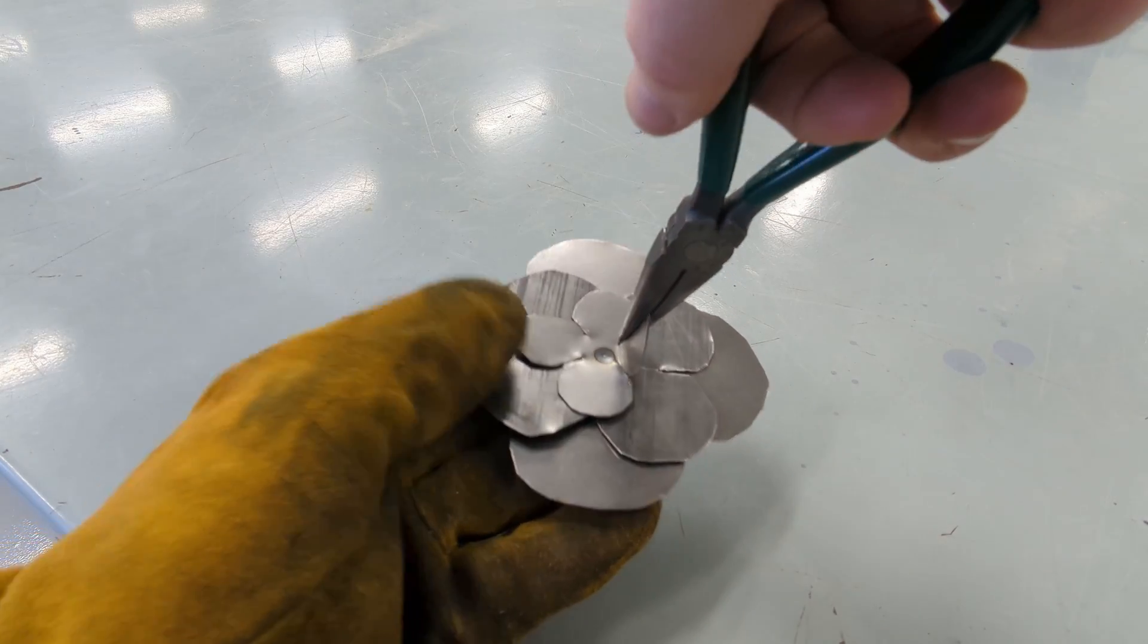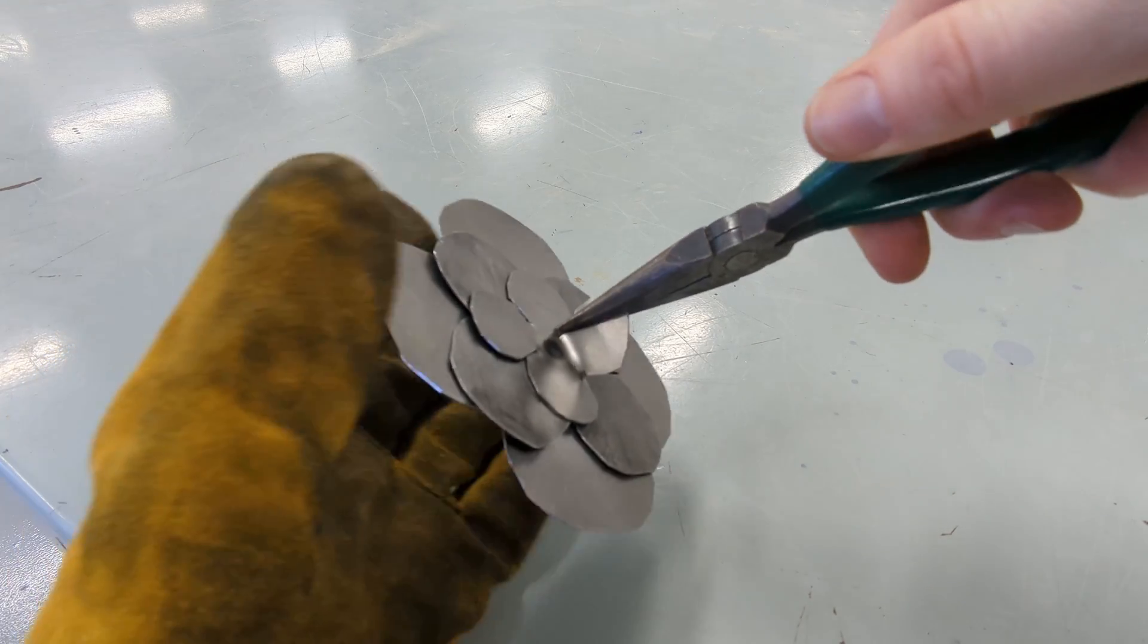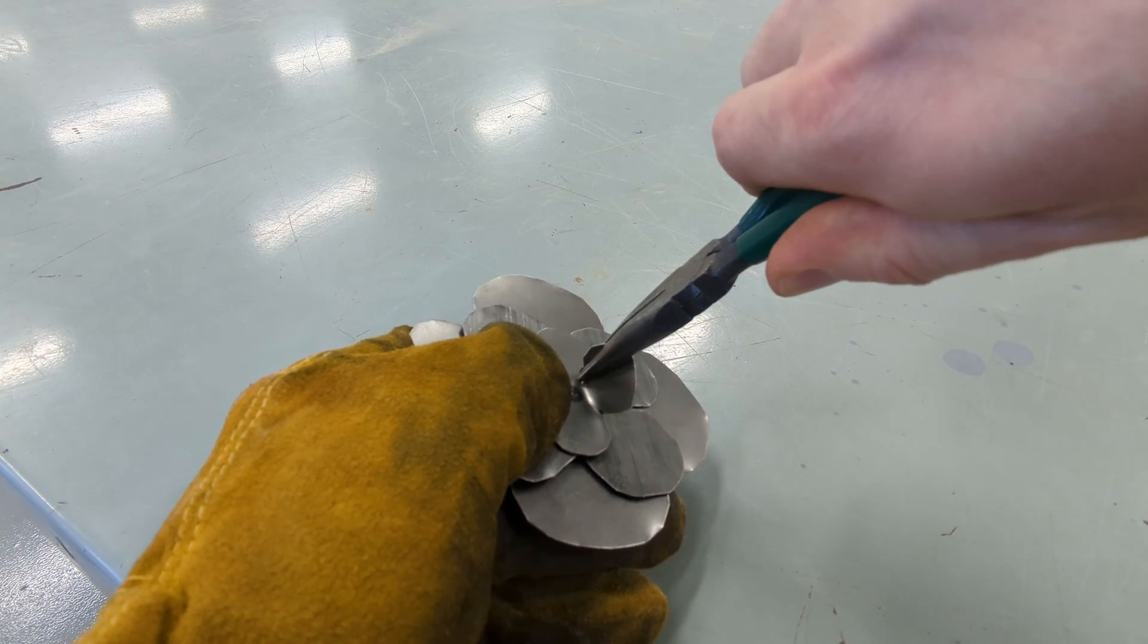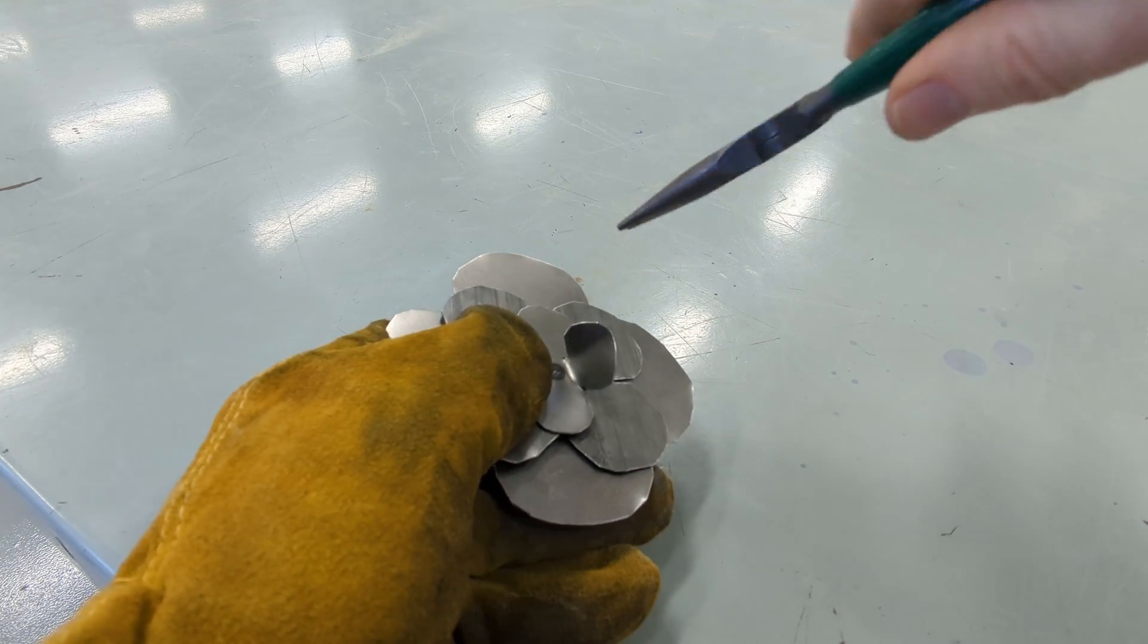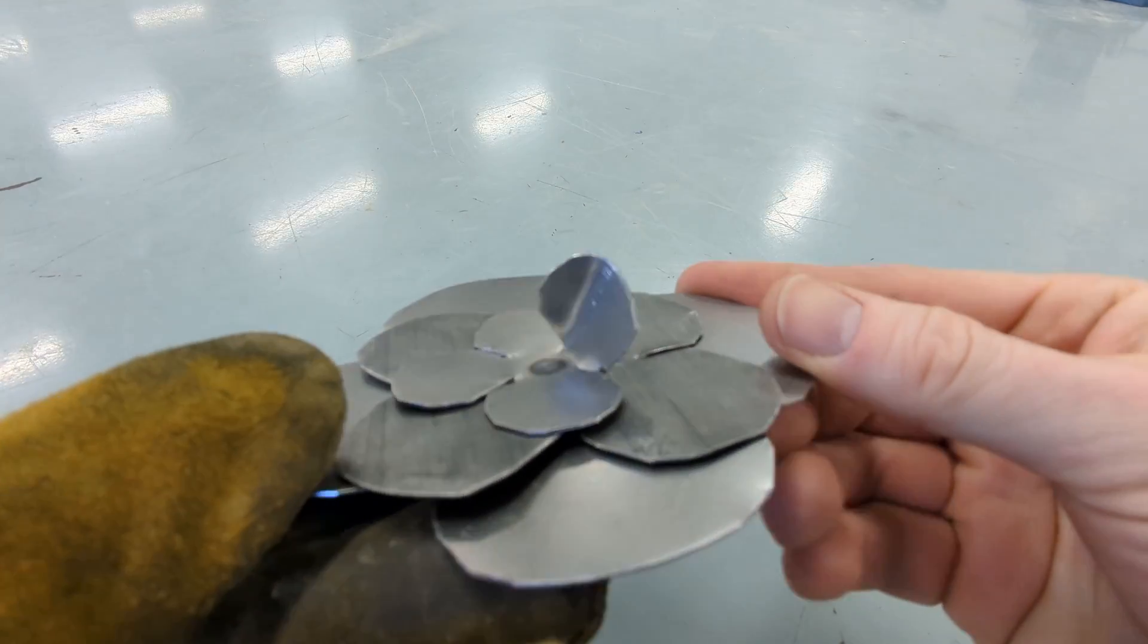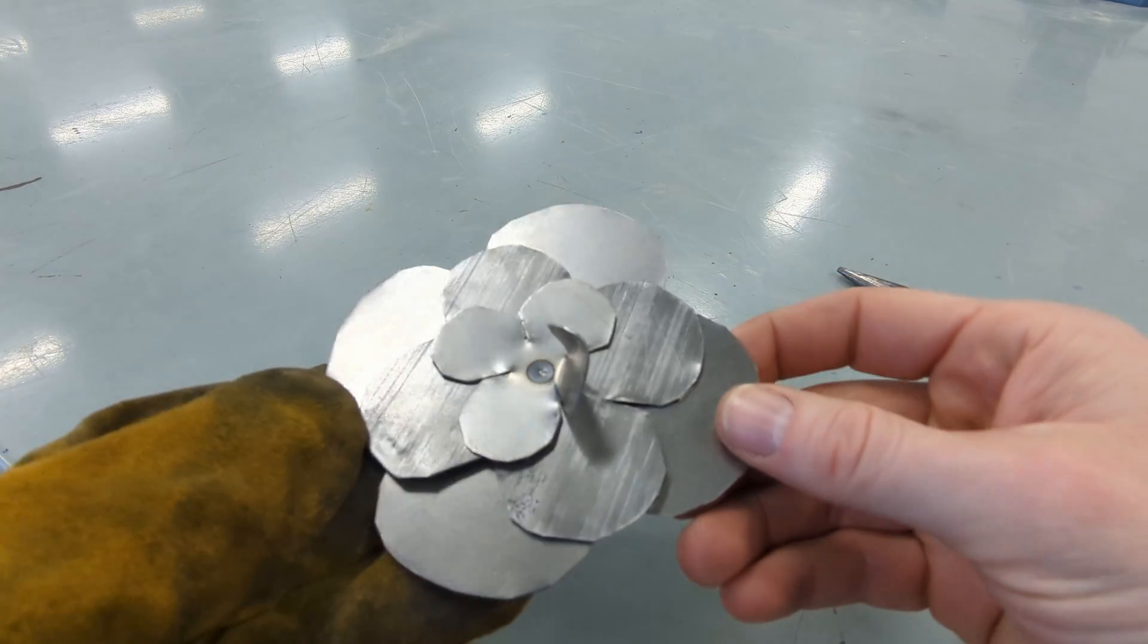And clamp your pliers down on one side of your petal that you just bent up and roll your wrist to bend a curve into that petal. Now we move on to the other petal.